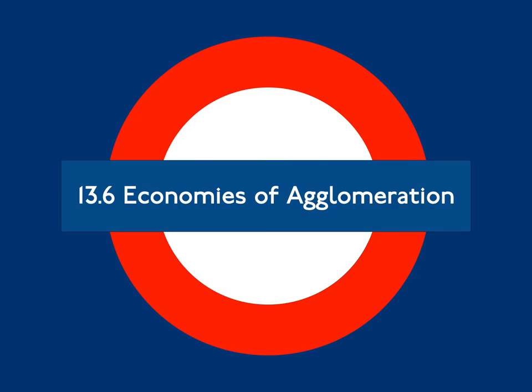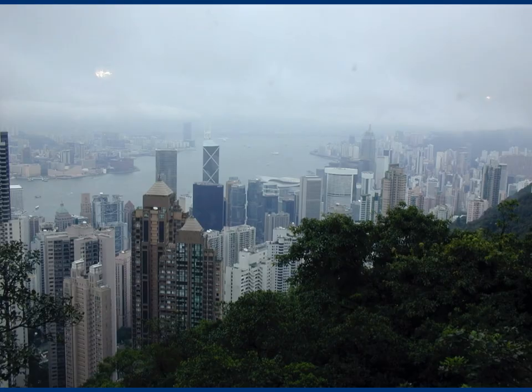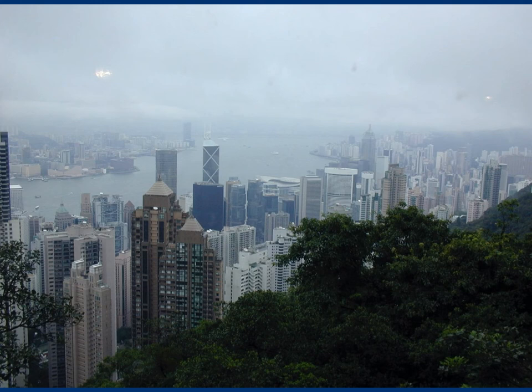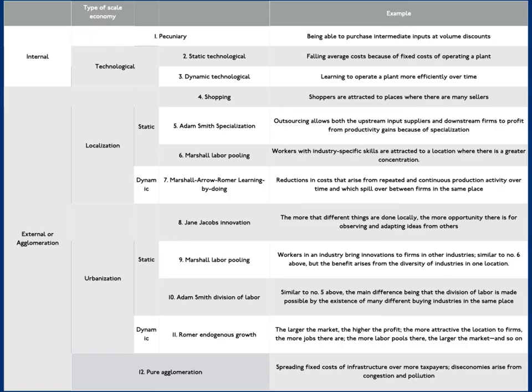13.6: Economies of Agglomeration. Cities exhibit economies of agglomeration. People and firms that choose to locate in cities tend to be more productive than if they did not. Economies of agglomeration are a type of inter-firm economy of scale or scope. There are many reasons why such economies exist, including access to ideas and a strong labor pool, as well as suppliers and customers, as detailed in Figure 13.2. If these economies didn't exist, there would be no economic reason for cities like Hong Kong (Figure 13.6) and no value of accessibility. While we hail the benefits of agglomeration, there must be some costs — diseconomies — otherwise everyone would agglomerate as quickly as possible.